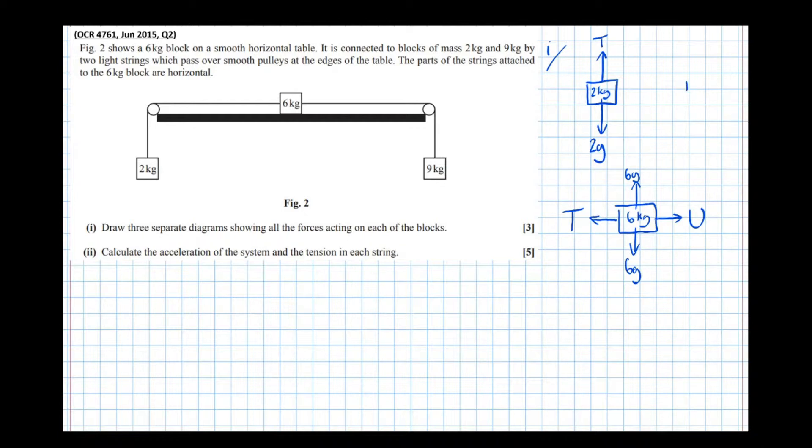Finally the nine kilogram block which I'll draw up here. Two forces acting on that: its weight which is 9g, and the piece of string pulling it up which is U. Same piece of string attached to the right of the six kilogram block, so I'm going to use the same letter. So that's part one done.